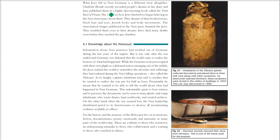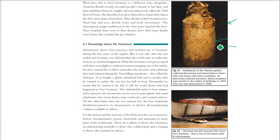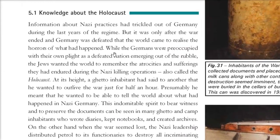Various books have been written about how Nazis stereotyped Jews. Inhabitants of the Warsaw Ghetto collected documents and placed them in three milk cans along with containers; as destruction seemed imminent, these were buried in the cellars of a building in 1943 and were later discovered in 1950. Denmark knew what Germany was going to do with the Jews, and Danish people used boats to take their Jews out of harm's way.